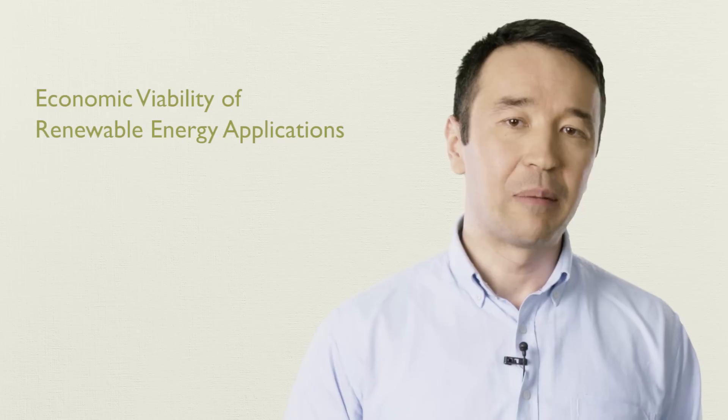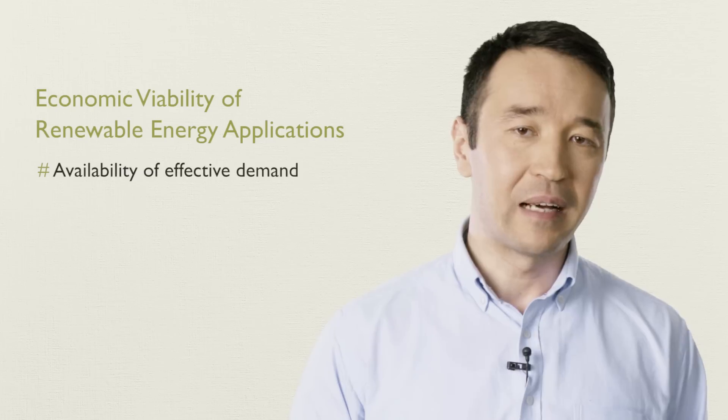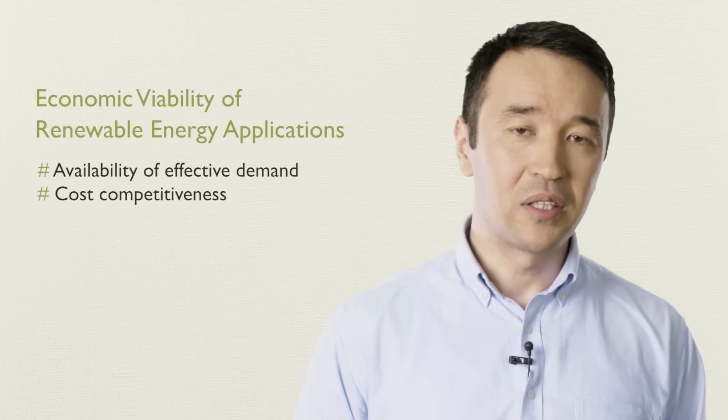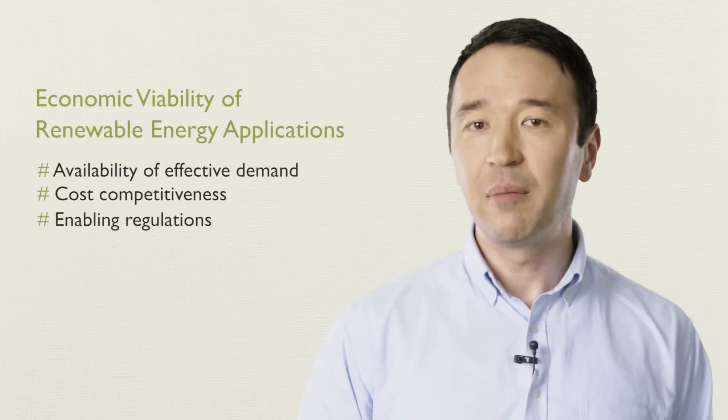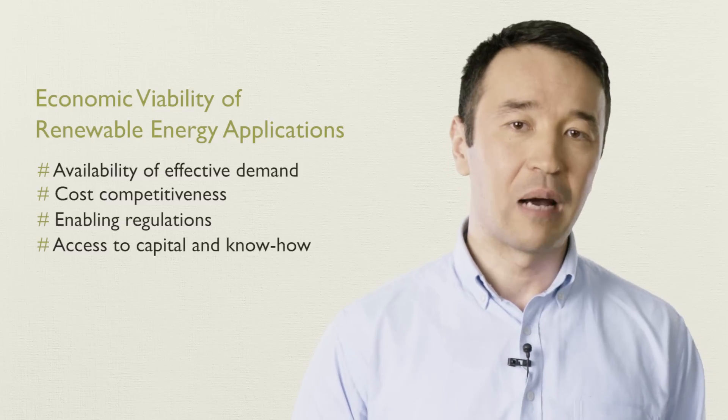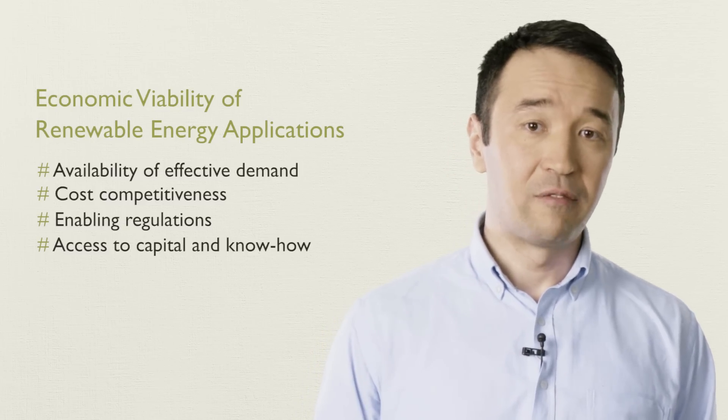There are already promising uses of solar energy at various stages of agricultural value chains, including for irrigation water pumping, water desalination, drying crops and forages, heating greenhouses, and refrigeration in post-harvest management. Economic viability of renewable energy applications in agriculture depends on availability of effective demand which can pay for the delivered goods and services, cost competitiveness of renewable energy with fossil fuels, enabling regulations such as government subsidies, and access to other sources of capital and know-how such as private investments, credits, or development grants and loans.